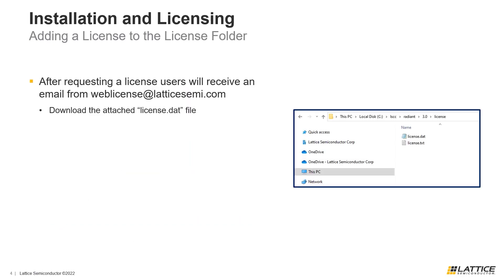After a license has been requested, users should receive an email from weblicense@latticesemi.com. This email will have an attachment called license.dat, which is the license file that is required for Radiant.